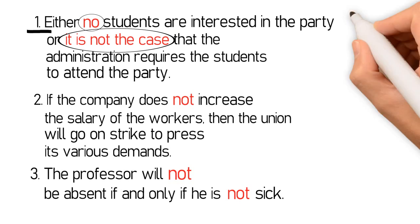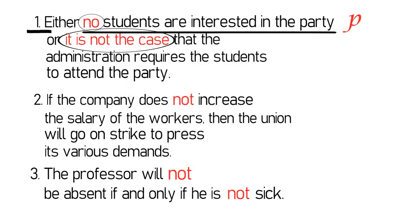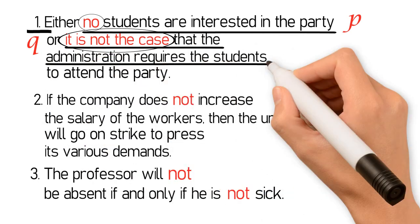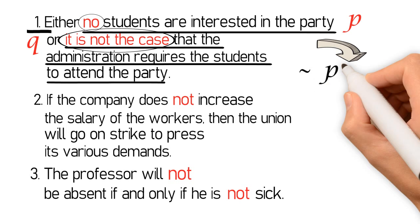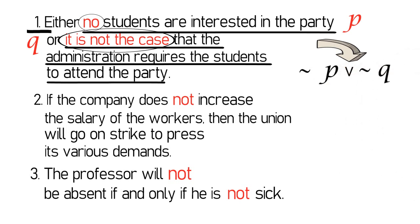Hence, if we let P stand for 'No students are interested in the party,' and Q for 'It is not the case that the administration requires the students to attend the party,' then the statement 'Either no students are interested in the party, or it is not the case that the administration requires the students to attend the party' can be symbolized as: NOT P OR NOT Q.